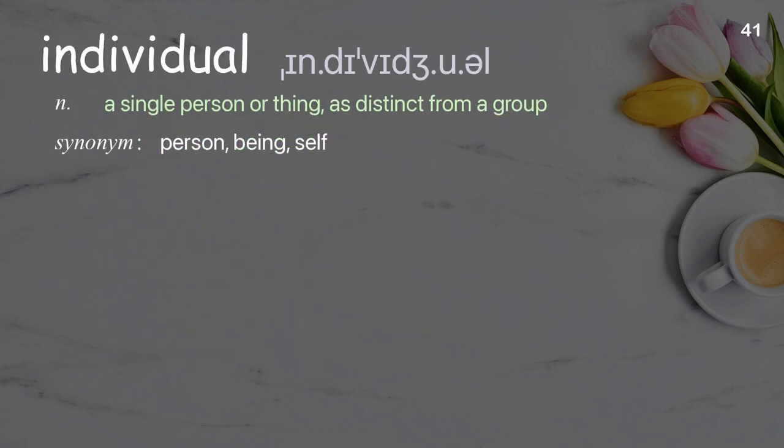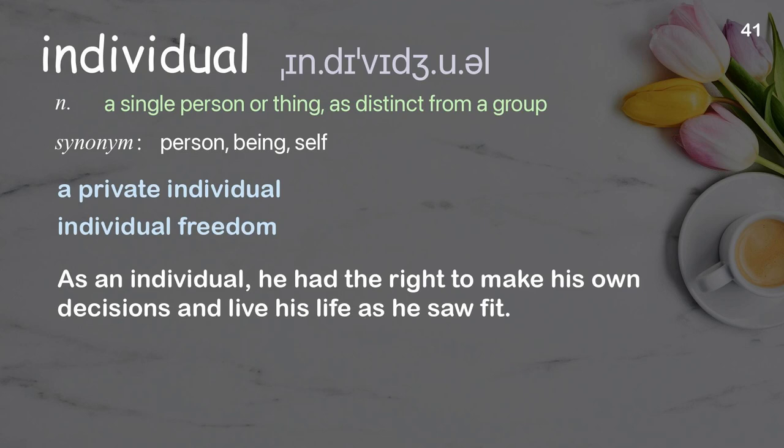Individual: a single person or thing as distinct from a group. Examples: a private individual, individual freedom. As an individual, he had the right to make his own decisions and live his life as he saw fit.